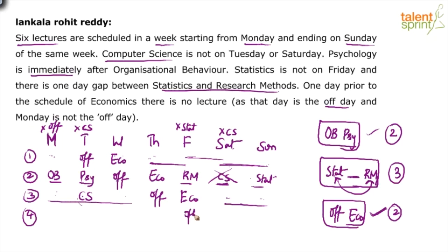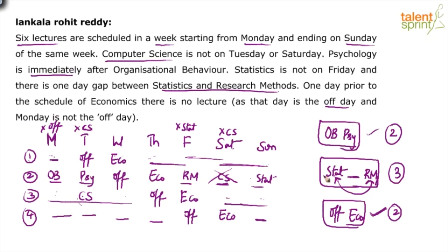Case 4: Off on Friday, Economics on Saturday. This is structurally similar to Case 1 — one individual position is available on Sunday and four consecutive positions remain. But we need two consecutive positions in one block and three consecutive in another, which is not achievable here. Case 4 is ruled out.